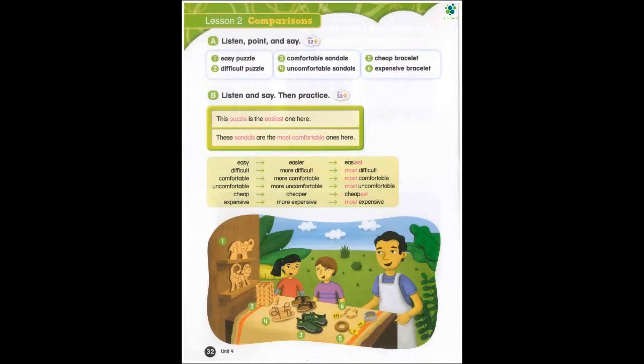Page 32 B. Listen and say, then practice. This puzzle is the easiest one here. These sandals are the most comfortable ones here. Easy, easier, easiest. Difficult, more difficult, most difficult. Comfortable, more comfortable, most comfortable. Uncomfortable, more uncomfortable, most uncomfortable. Cheap, cheaper, cheapest. Expensive, more expensive, most expensive.